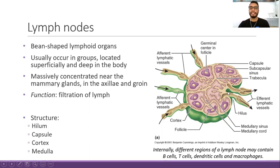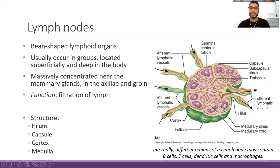The hilum is the place where we have the exit of the efferent lymphatic vessels. We have the capsule, which is made of fibrotic tissue. We have a cortex — this area forms nodules quite similar to the nodules you learned about in the thymus. This is considered the cortex, and within the cortex, deep inside, we have the medulla.